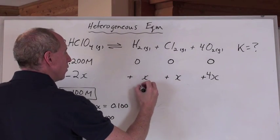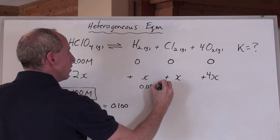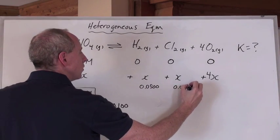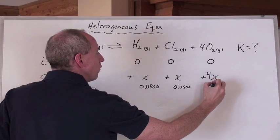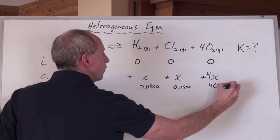And so, therefore, guess what we know? We know that this is 0.0500. We know that this x is 0.0500. And we know that this is four times 0.0500.